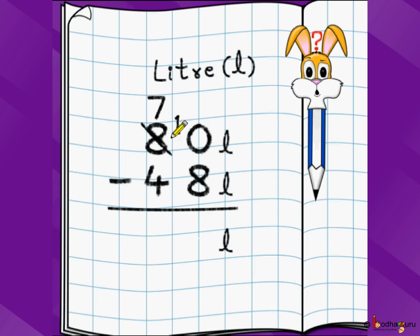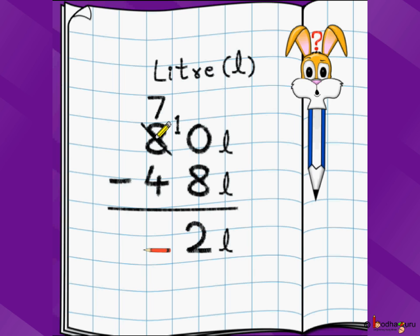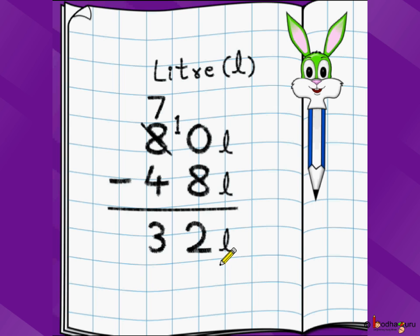8 becomes 7 and 1 comes here, so 0 becomes 10. Now we can do 10 minus 8 because 8 is lesser than this number. 10 minus 8 is 2. 7 minus 4 is 3. So the answer is 32 litres. Don't forget the unit — the problem was in litres, so the answer is also in litres.